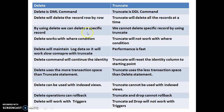By using delete, we can delete a specific record. For example: delete from employee where E number equals 101, or delete employees whose salary is greater than 50,000, or who is working in a specific department. If you want to delete a specific record, you can use delete. Truncate cannot delete a specific record — it deletes all records at a time. Delete works with a WHERE condition, but WHERE condition will not work with truncate.